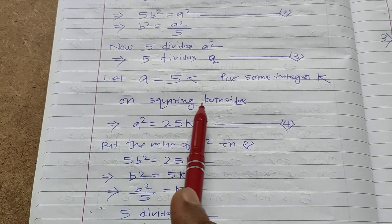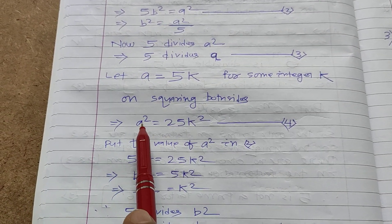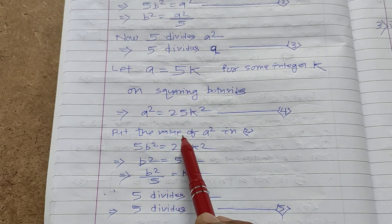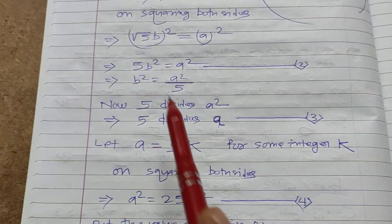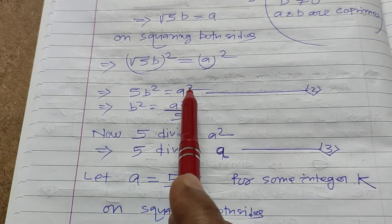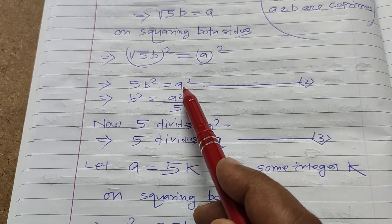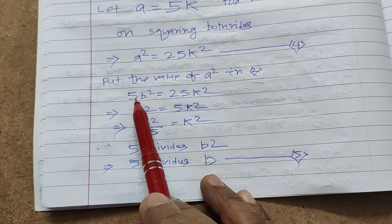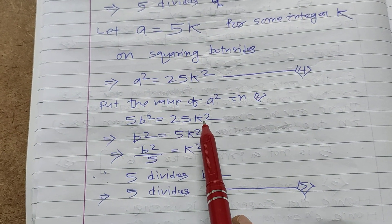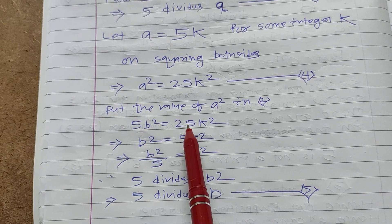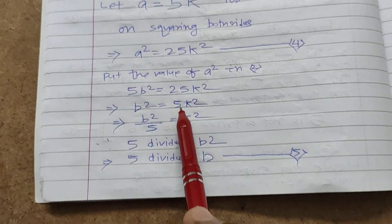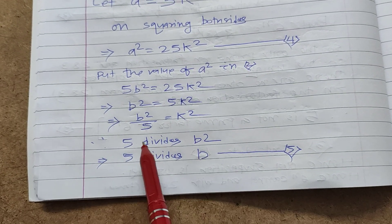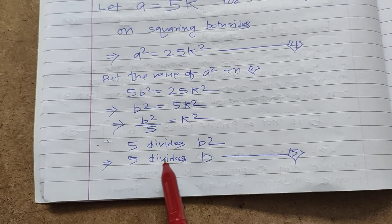Now, on squaring both sides, we get a square is equal to 25k square. Substituting the value of a square into the equation 5b square equals a square, we write 5b square is equal to 25k square. Dividing both sides by 5, b square is equal to 5k square. That means 5 divides b square, so 5 divides b.